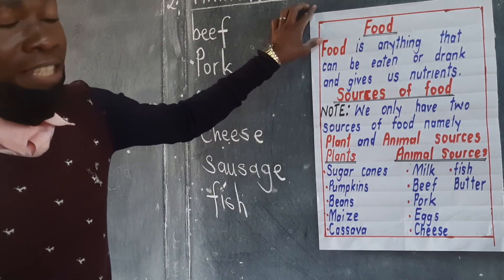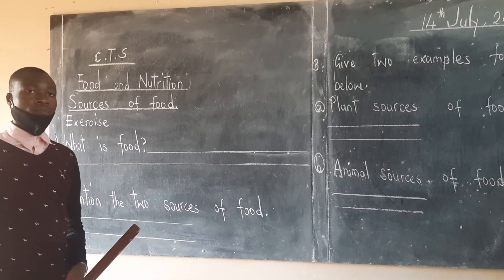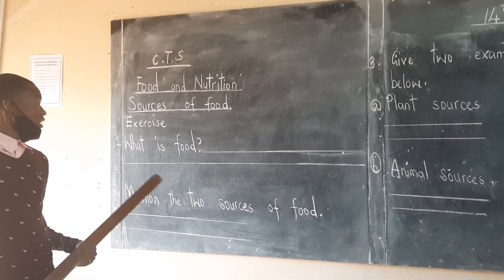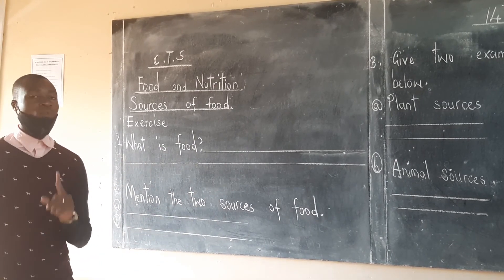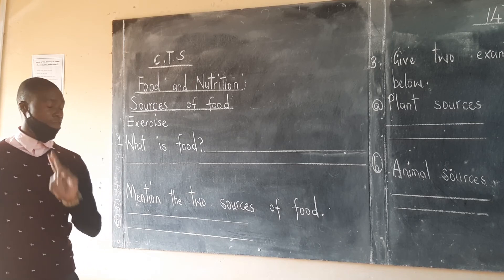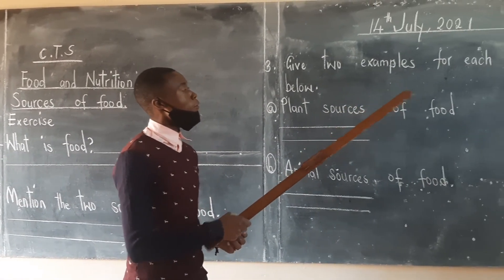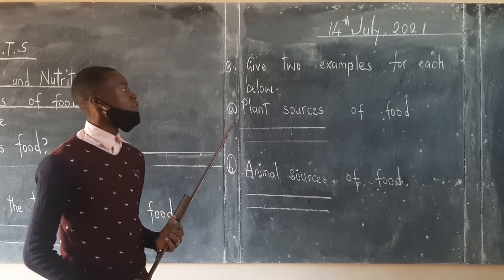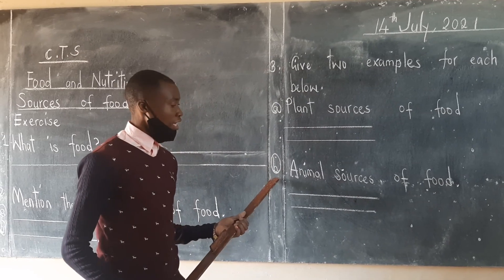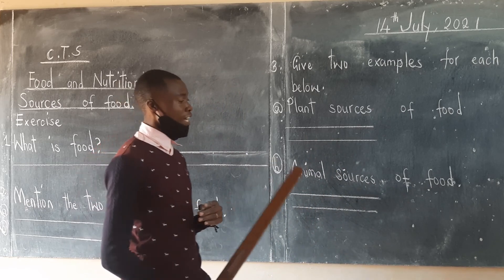Before I say goodbye, I would love to leave you with an activity. The first question is: what is food? The second: mention the two sources of food. And question three: give two examples for each — A, plant sources of food, and B, animal sources of food. You need to write two examples for each.